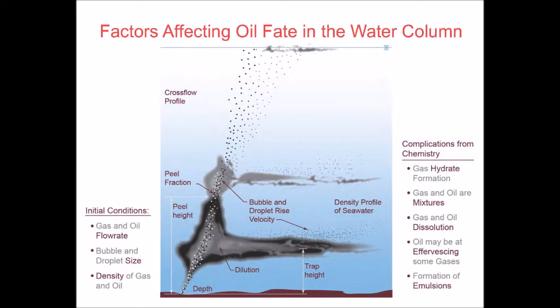The oil from the reservoir is at much higher pressure with a lot of gas dissolved into it, so this gas starts to come out of the liquid phase in an effervescing or evolution effect. With high turbulence both in the plume and later at the free surface, we may form emulsions — like salad dressing. If you take it out of the refrigerator it's separated; when you shake it, it stays mixed for a short time. Depending on the oil properties and amount of turbulence, emulsions can be unstable, like salad dressing separating in minutes, or very stable, like petroleum jelly, which can last for years.